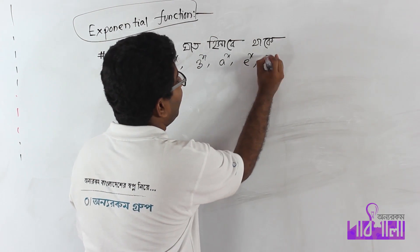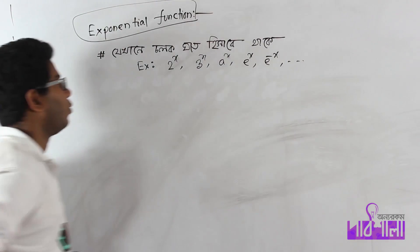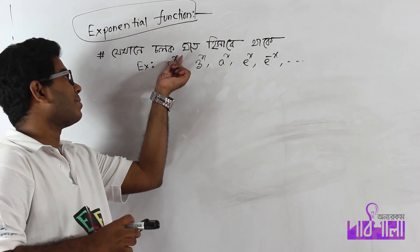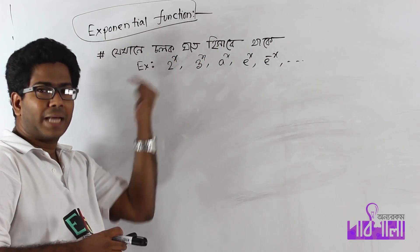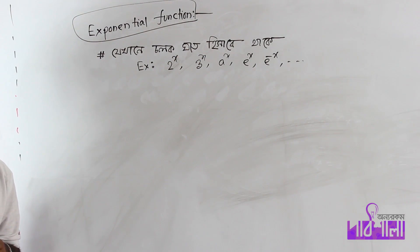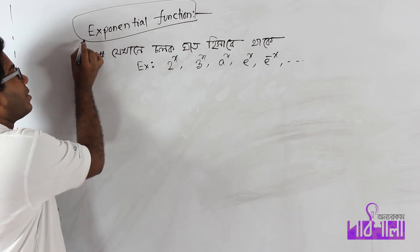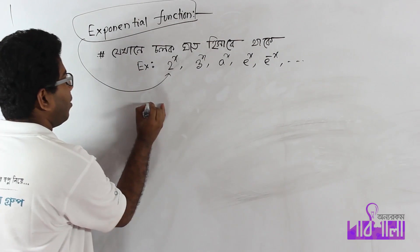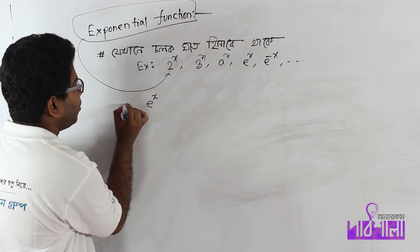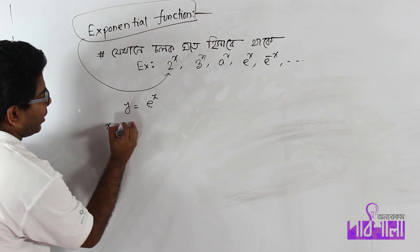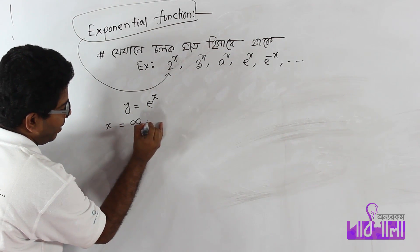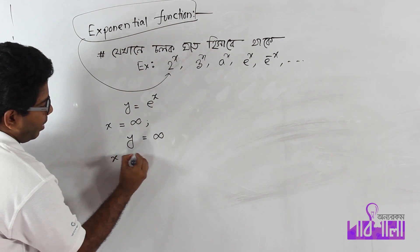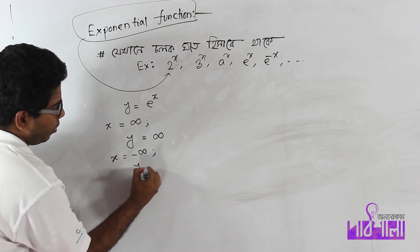We have functions like a to the power x, e to the power minus x. These are exponential functions. When x goes to minus infinity, y approaches minus 0.